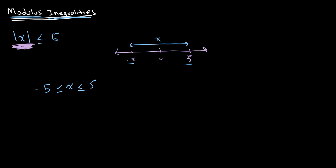So essentially our expression is saying that the magnitude of x is less than or equal to 5, therefore you'll find the value of x somewhere between negative 5 and 5.